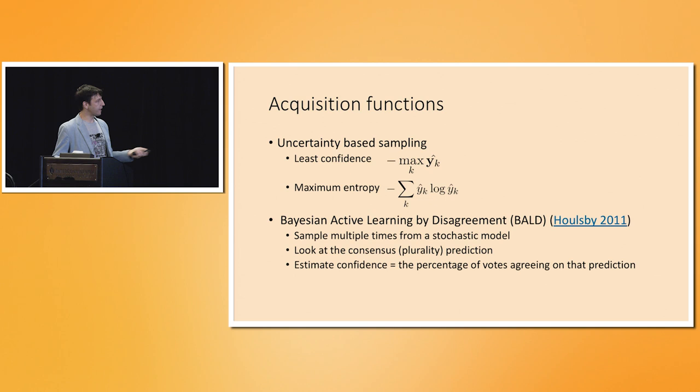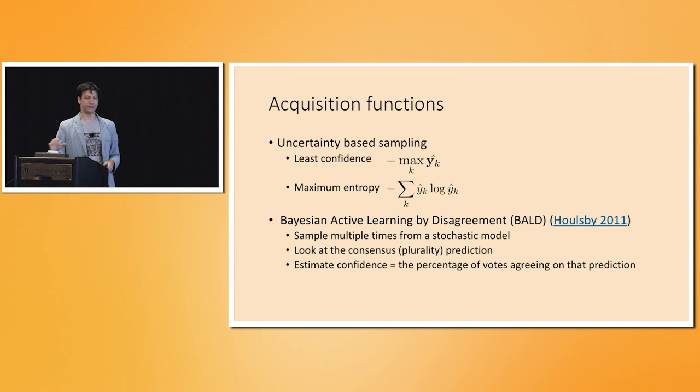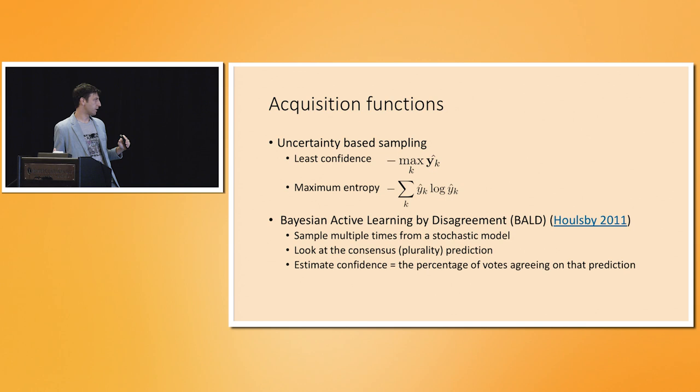A related heuristic is maximum entropy, which becomes the same as least confidence for binary classification. Least confidence looks only at the component corresponding to the predicted class, while maximum entropy looks at the entropy of the full softmax distribution — the more entropic, the more uncertain the classifier.